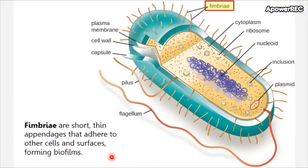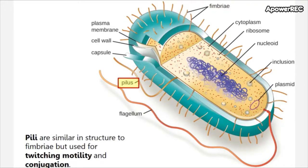Next are fimbriae, which are short thin appendages that adhere to other cells and surfaces to form biofilms. We also have pili, which are similar in structure to fimbriae but used for twitching motility and a very special source of genetic transfer called conjugation.